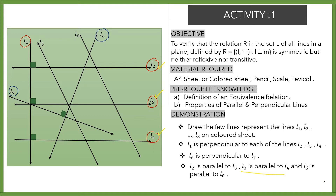L5 and L8 are also parallel to each other. Now, you can see there is a relation between L1 and L2; L1 is also related with L3 and L4. L6 is also related with L7.